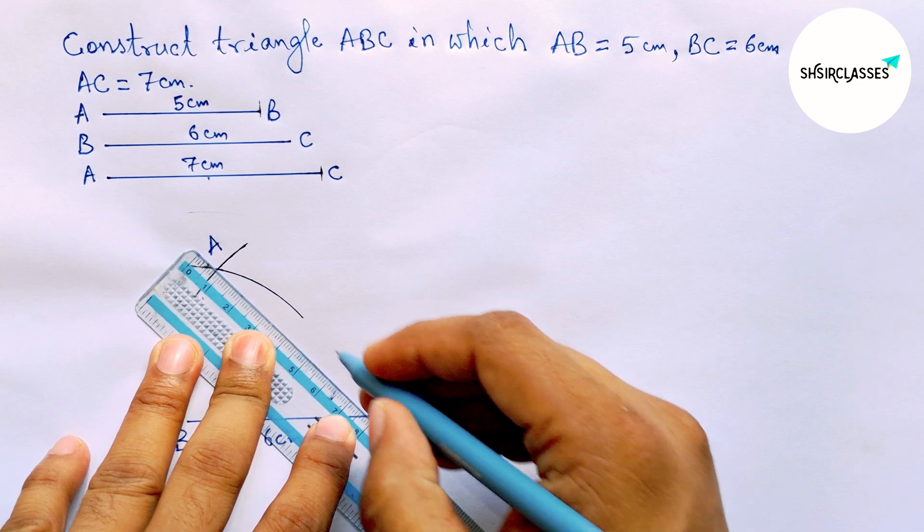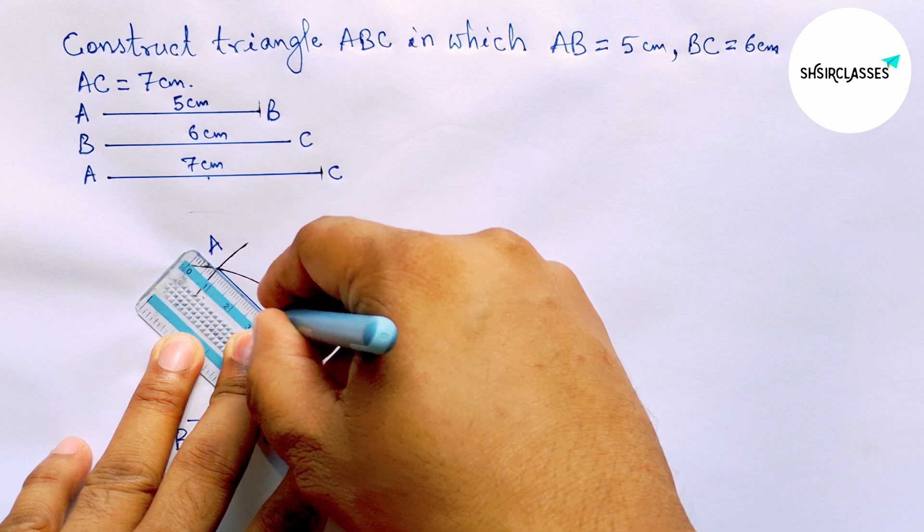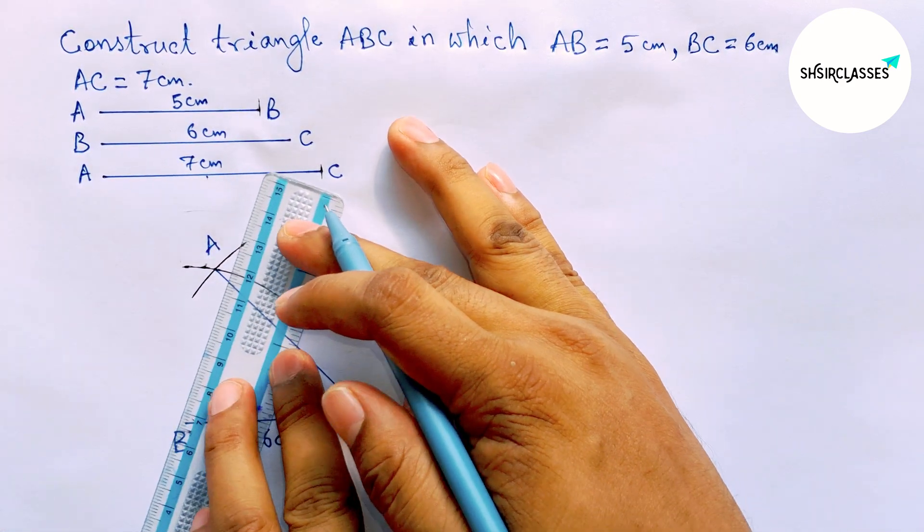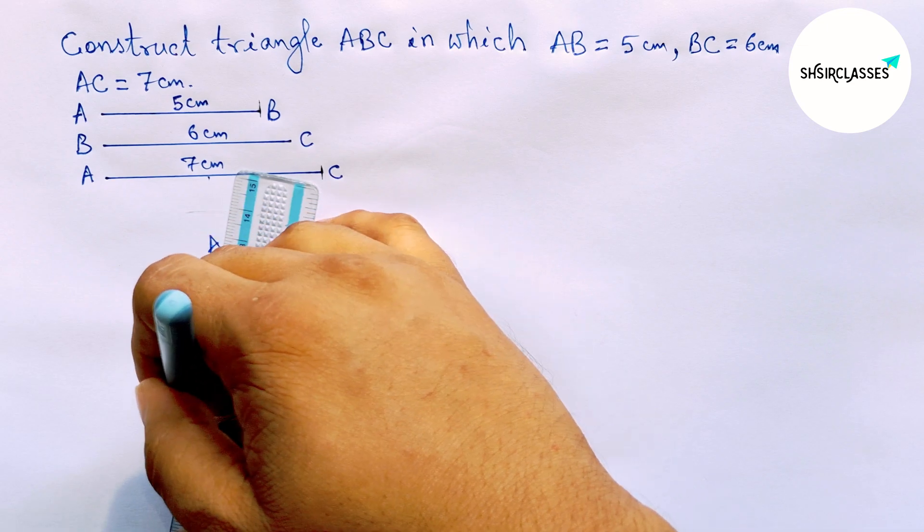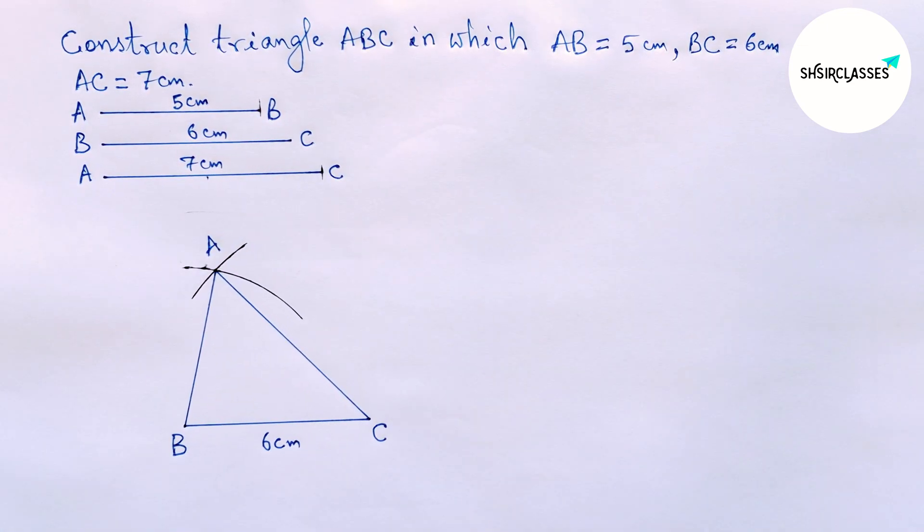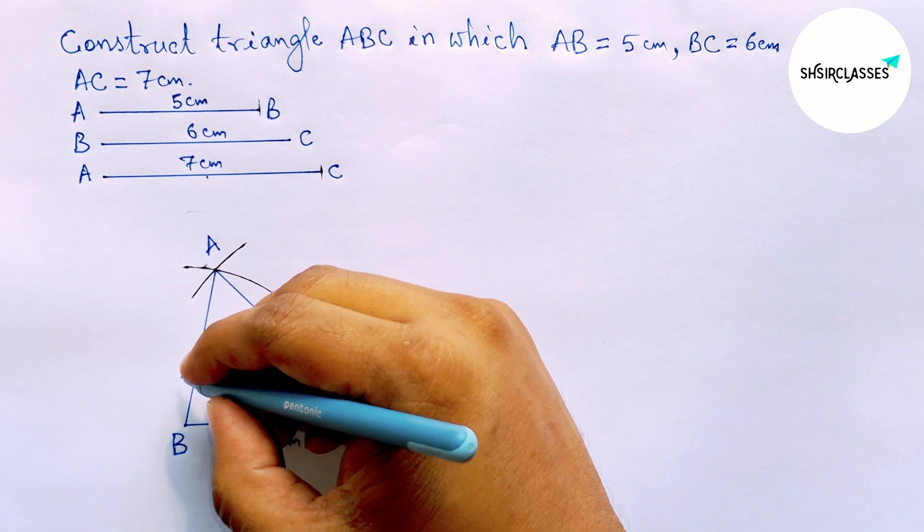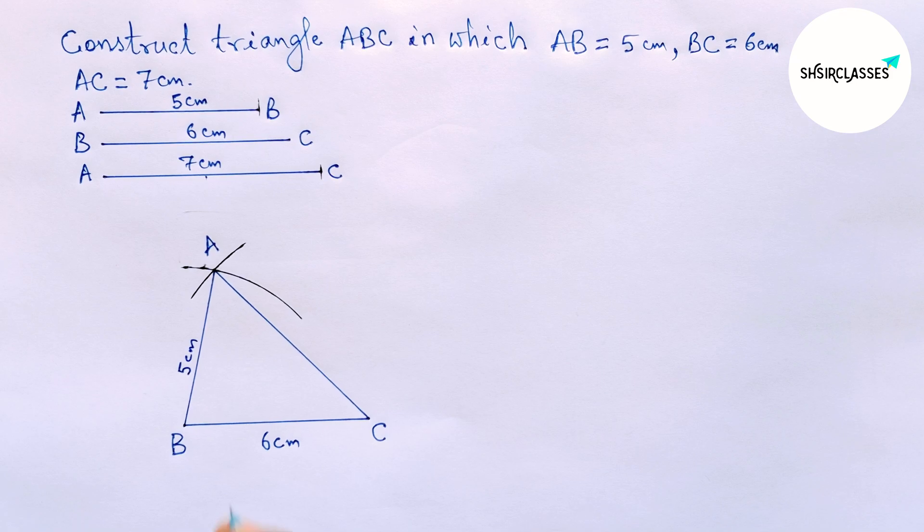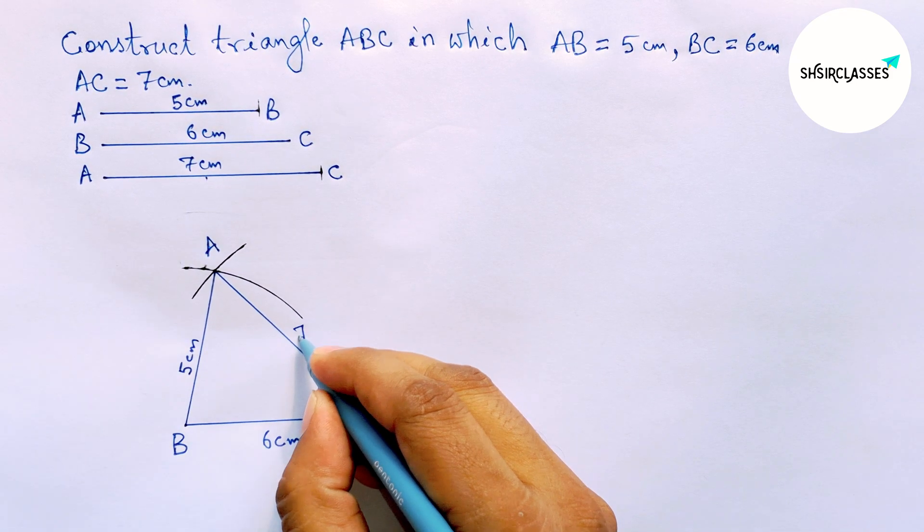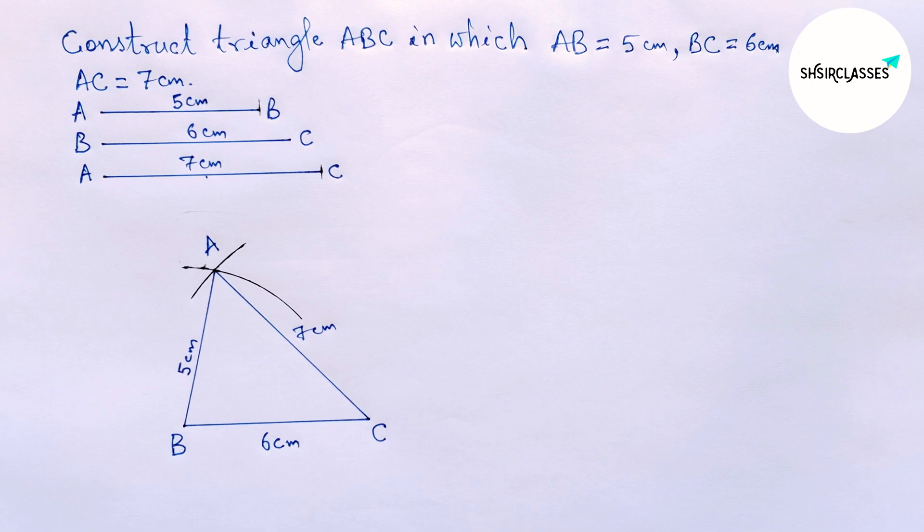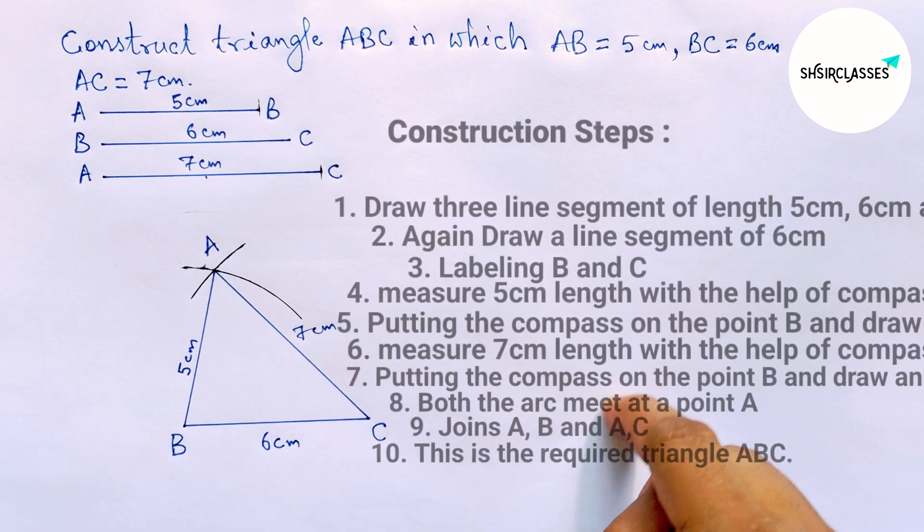Now first joining A and C, then joining A and B to complete our required triangle ABC. Okay, so now AB equals 5 centimeters, so here 5 centimeters, and AC equals 7 centimeters. So this is the required triangle ABC.